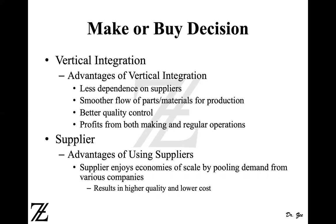In a vertical integration, when you are your own supplier and also a manufacturer, you have less dependence on suppliers. You have your own material and don't have to rely on them. Your flow of material is smoother because you can have it whenever you want. It's not like you have a shortage of material and they charge you higher transportation costs for urgent delivery.